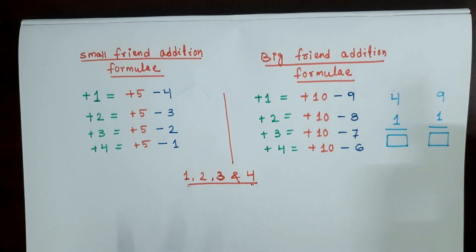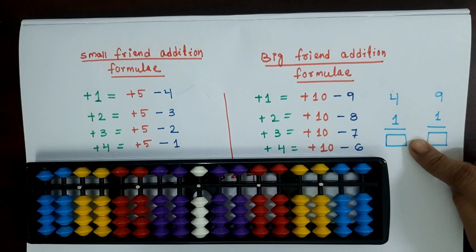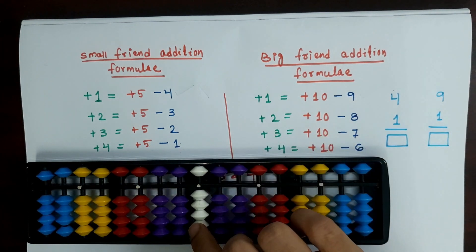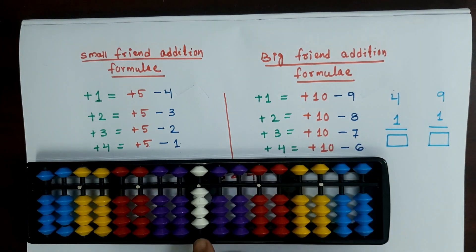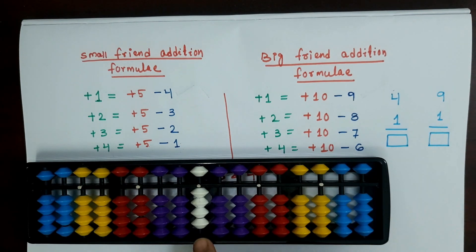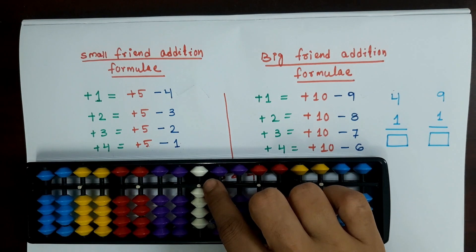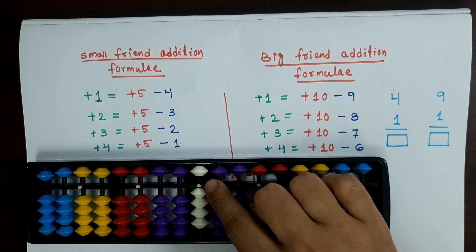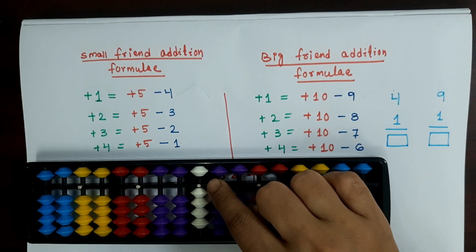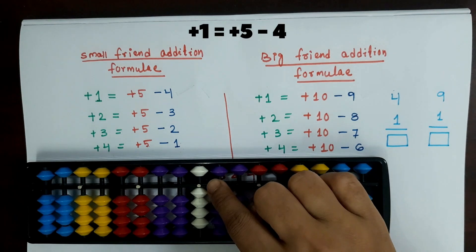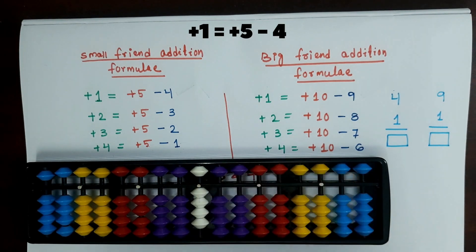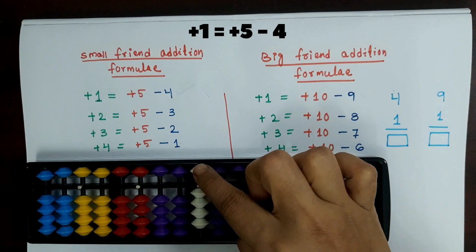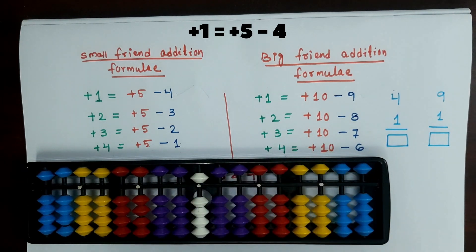Now we will take one example: 4 plus 1. Here we have to first check whether we can apply the small friend addition of 1 or not. For applying the small friend addition, we must have the upper beads available — we must have the bead of 5 available. Here we have the bead of 5 available, so we can apply the small friend addition of 1, which equals plus 5 minus 4. Our answer is 5.